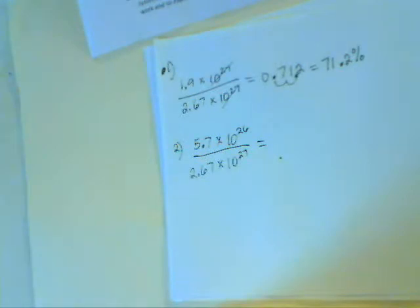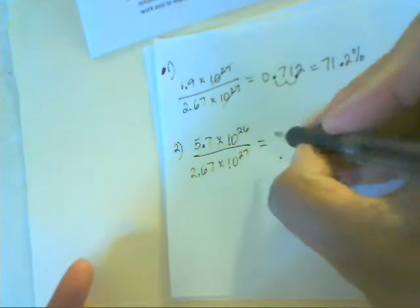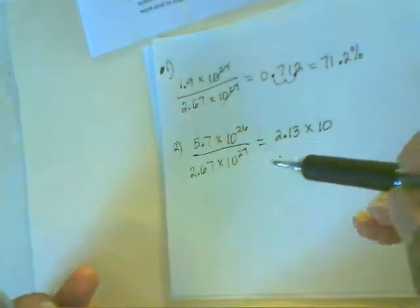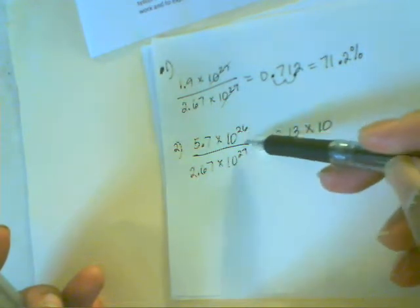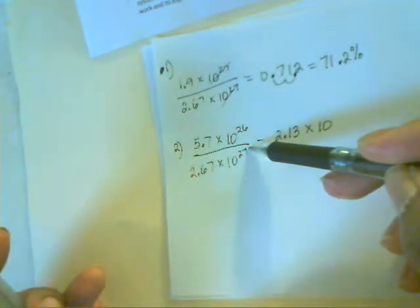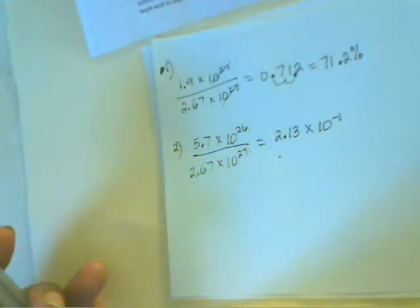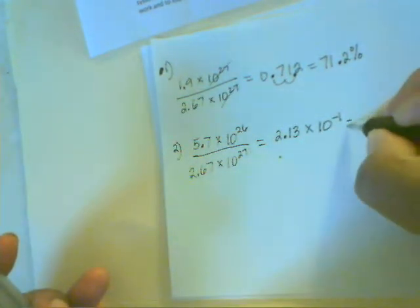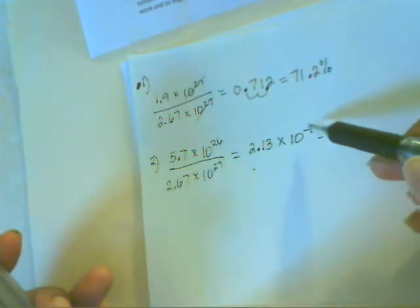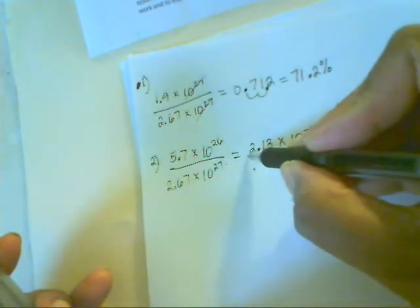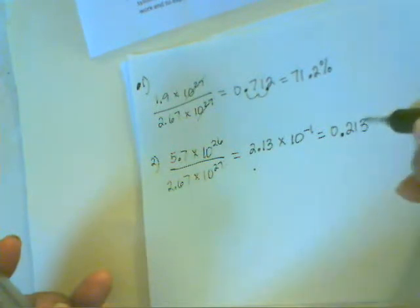We're going to take 5.7 and divide by 2.67, which is 2.13, and that's going to be multiplied by 10. We're dividing powers with the same base, so we subtract our exponents: 26 minus 27 equals negative 1. So that's 2.13 times 10 to the negative 1st power. Converting to standard notation, the negative 1 exponent tells us to move the decimal point one place to the left, giving us 0.213.